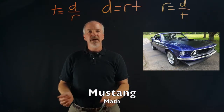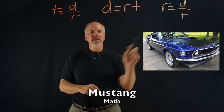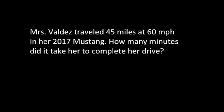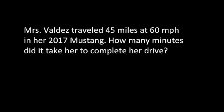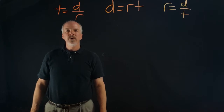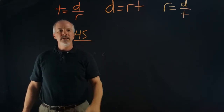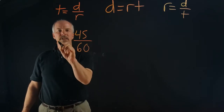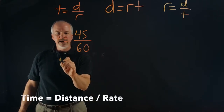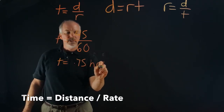This is the special edition of Mustang Math, and we will be looking at three word problems — finding time, finding distance, and finding rate. In this problem, Mrs. Valdez traveled 45 miles at 60 miles per hour. How many minutes did it take her? We have distance equals 45 and rate equals 60, so time equals 45 over 60, which gives us 0.75 hours.